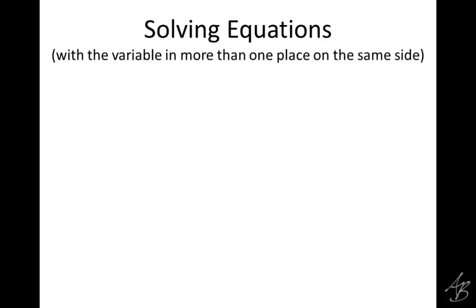So there are a couple of things we're going to have to do. Sometimes we're going to have to add like terms like we did in the last one, and other times we're going to have to do something else before we combine like terms, because we'll run into something we saw in the opener today where we have a variable in parentheses. When solving equations with a variable in more than one place — all on the same side of the equal sign for now — these are the things we're going to have to do.